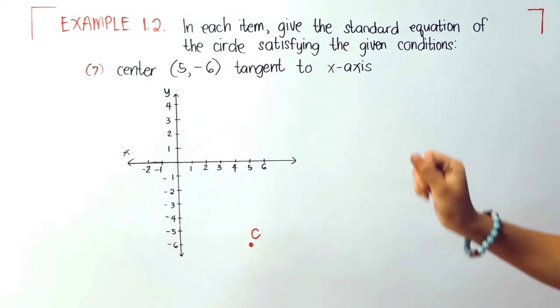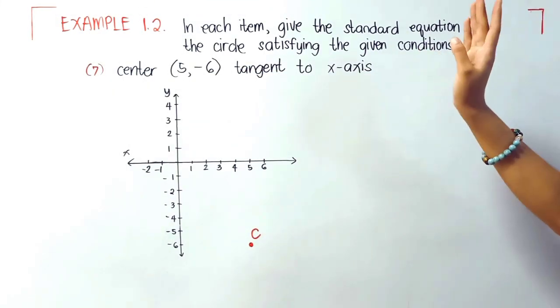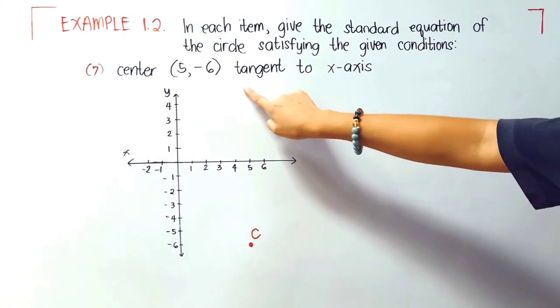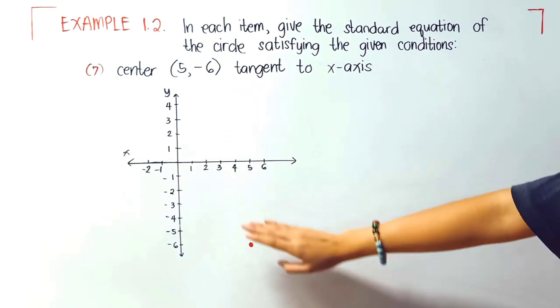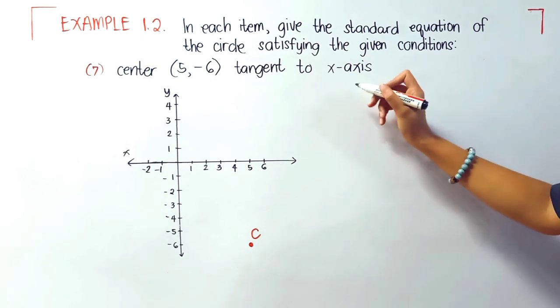Problem 7. Considering the same center, but this time it's tangent to x-axis. Again, we'll plot the center, 5 negative 6.